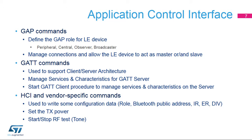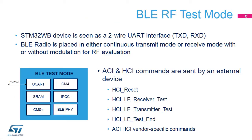IR is the identity root key used to derive the LTK and CSRK keys. ER is the encryption root key used to derive the LTK and CSRK keys. And DIV is used to derive the CSRK key. The Bluetooth Low-Energy radio test mode verifies the STM32WB transmit and receive performance.